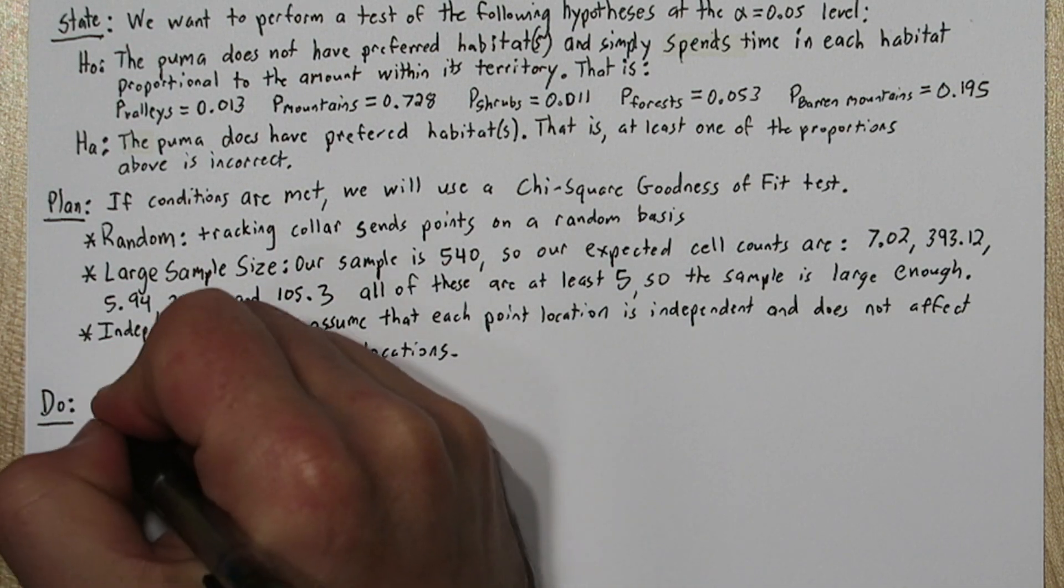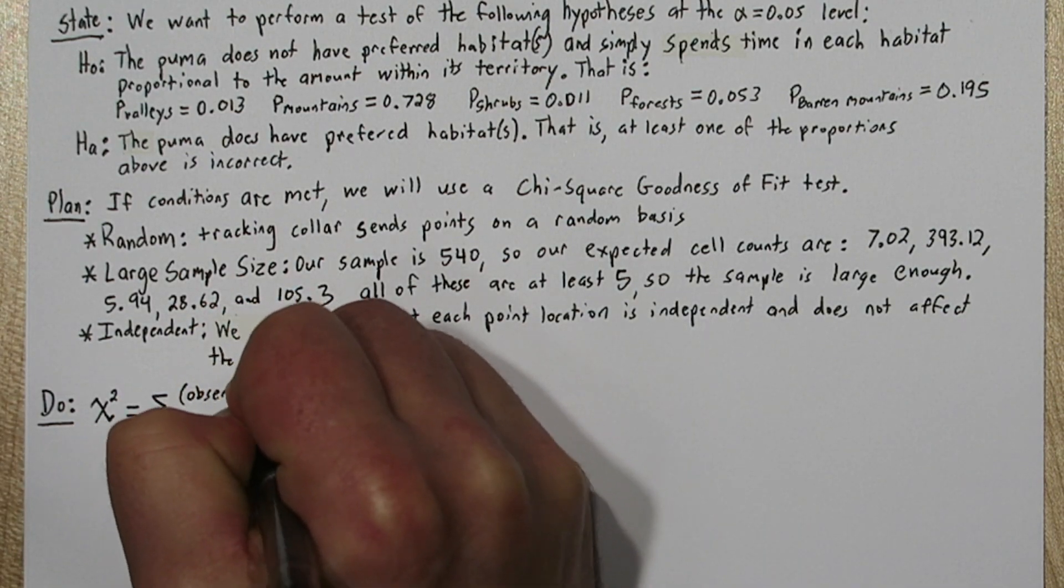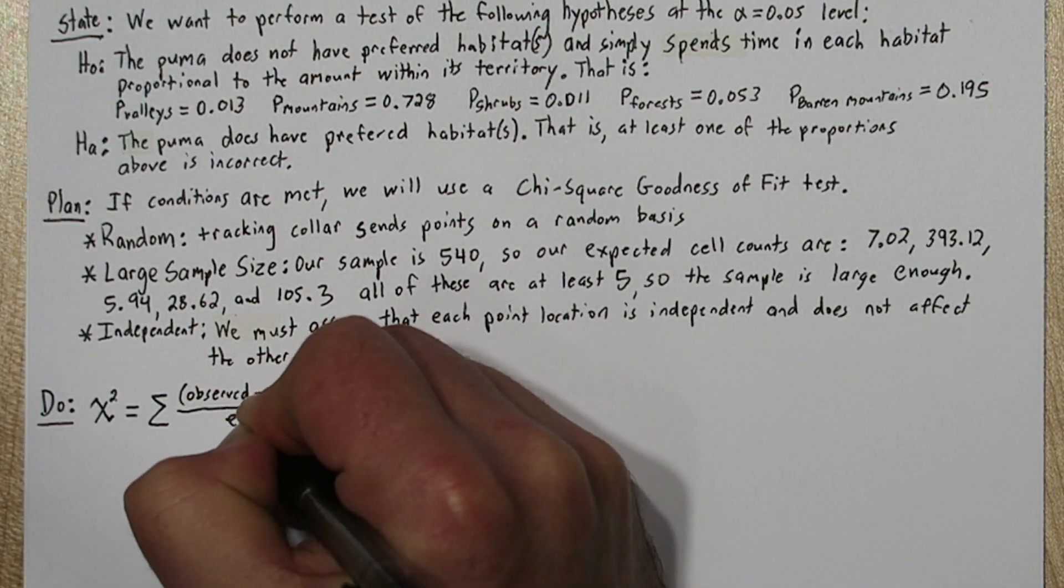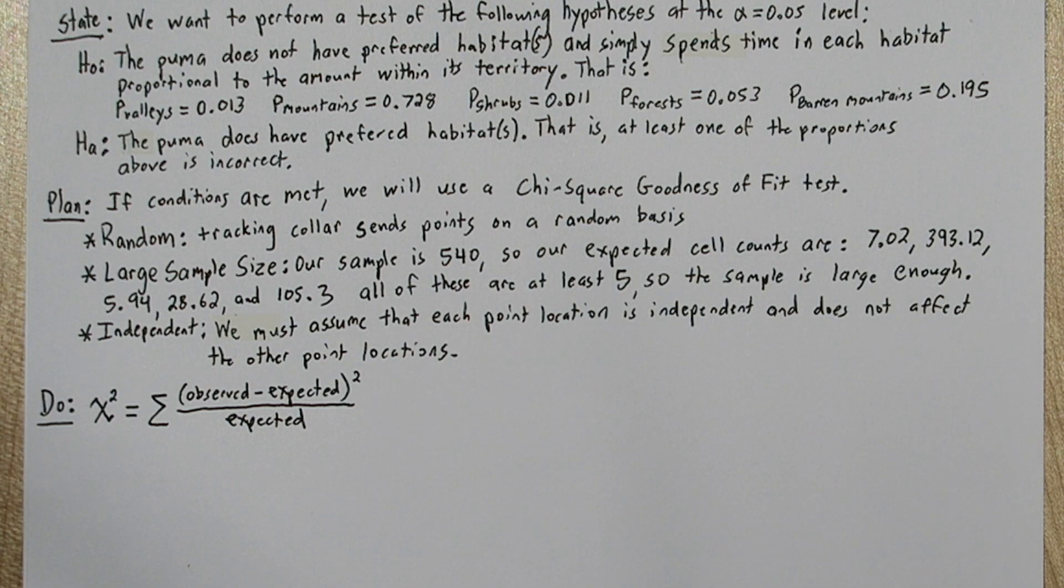In the do step, we need to calculate our chi-square test statistic, which is the sum of the quantity observed minus expected squared divided by expected.